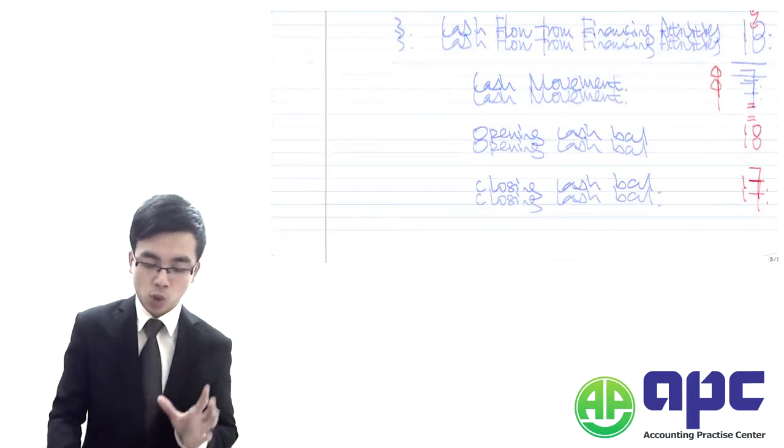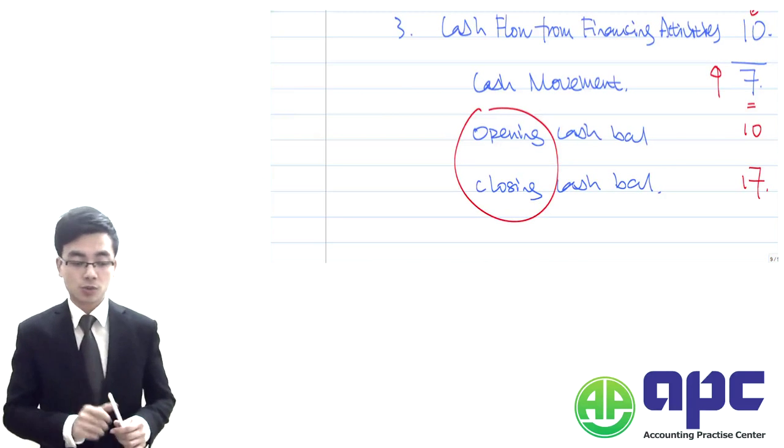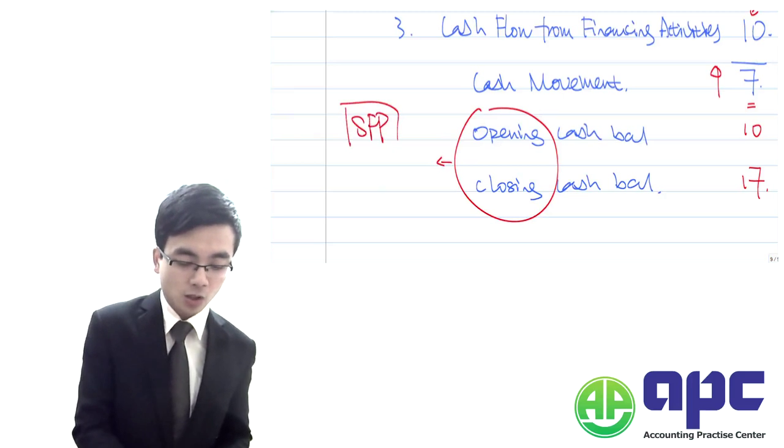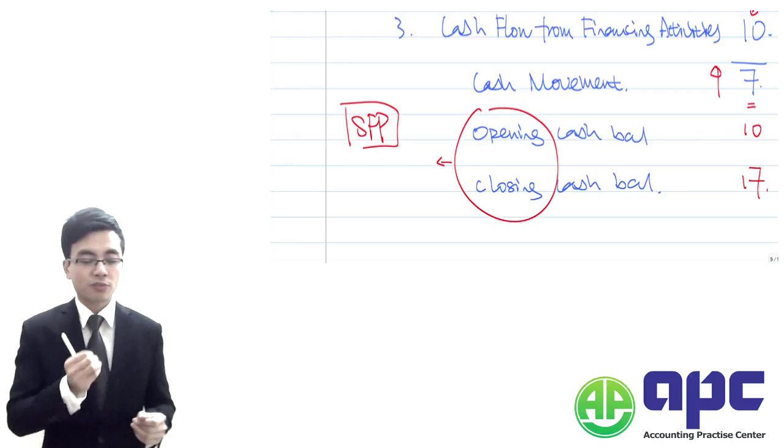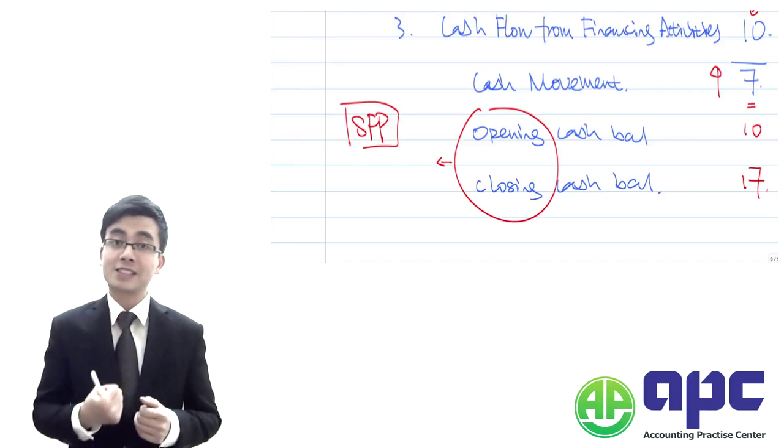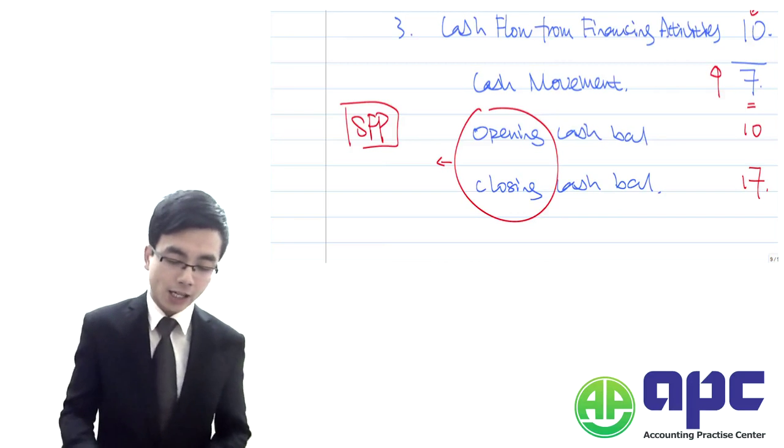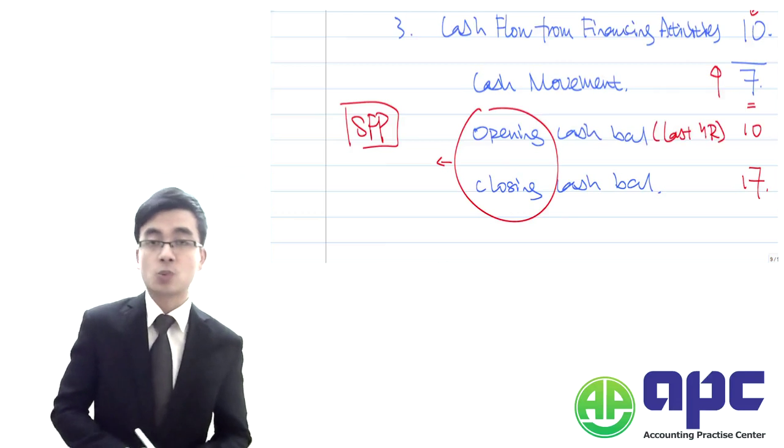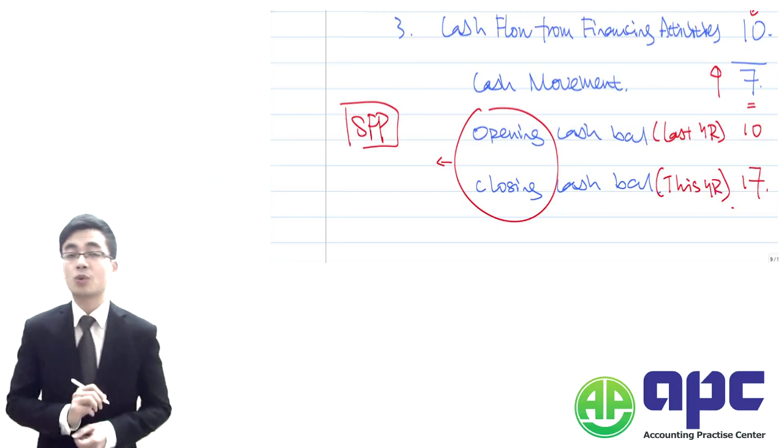But the question is, why are we going to show this? Of course, the opening cash and closing cash will be detailed into the SFP, which is the statement of financial position. Within the statement of financial position, we've got the opening cash of 10 and the closing cash of 17. So the opening cash would be last year's cash balance within the SFP, and the closing cash will be this year's cash balances within the SFP.